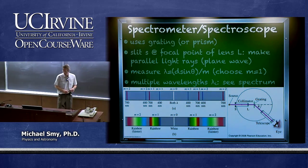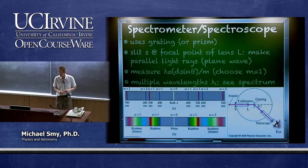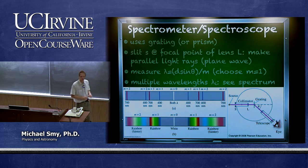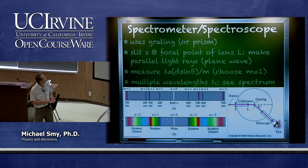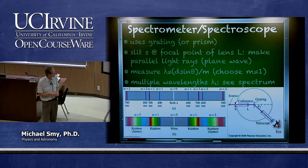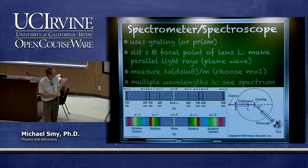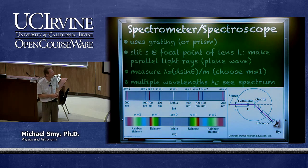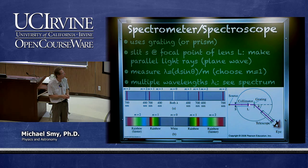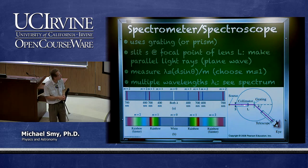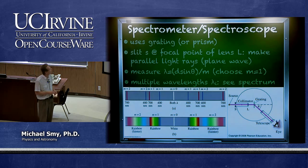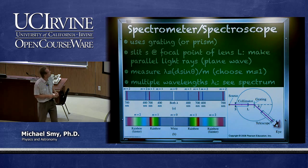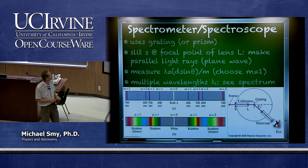One can design a spectrometer or spectroscope using diffraction gratings — and although a prism uses dispersion similarly, diffraction gratings are far more effective. The apparatus works by passing light through a slit at the focal point of a converging lens, generating a plane wave impinging on the grating, and then measuring the angle very precisely with a telescope to get a precise measurement of the corresponding wavelengths.